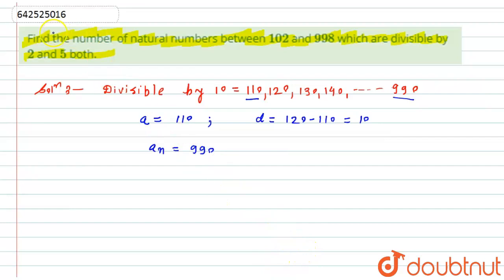What we have to calculate? We have to find the number of natural numbers, means we have to find the value of n. As we know that the formula is: an equals a plus (n minus 1) times d.